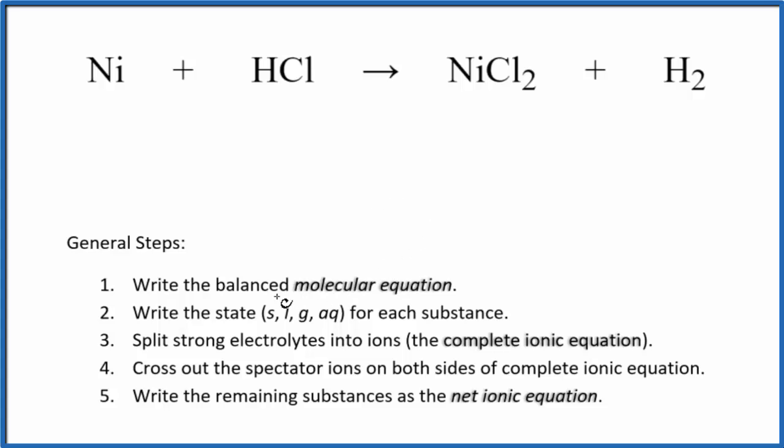So the first thing we do is balance the molecular equation. This is the molecular equation. I can see I have one hydrogen here and two here. So let's put a two in front of the HCl. Two hydrogens and two chlorines. That's good, we have two chlorines here and we have one nickel on each side. This is the balanced molecular equation.